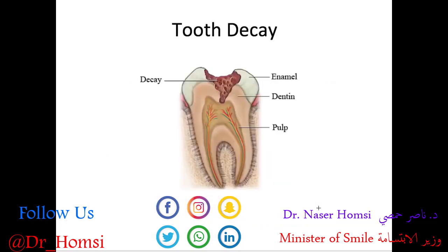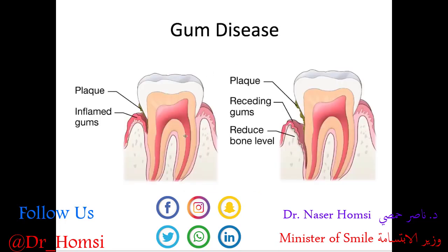Now let's talk about disease processes that can happen to teeth. Tooth decay refers to the loss of mineral structure due to bacteria and their products. The usual cause is plaque — a collection of bacteria on the tooth surface. Gum disease also involves plaque, the collection of bacteria on a tooth surface, sometimes called biofilm.